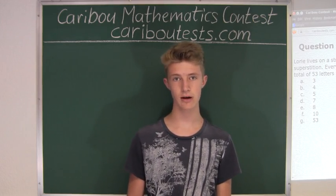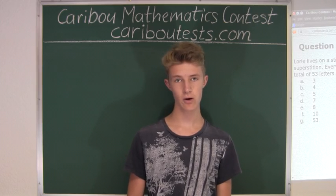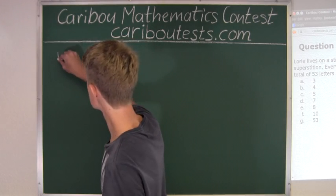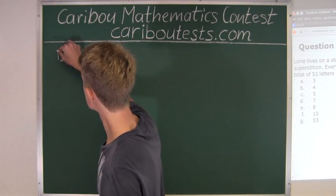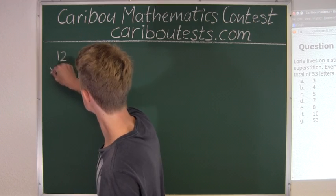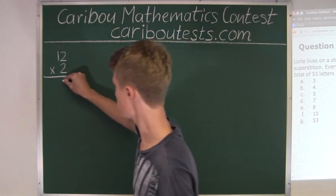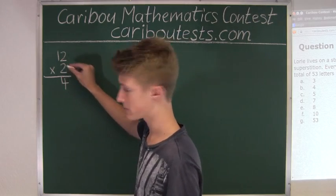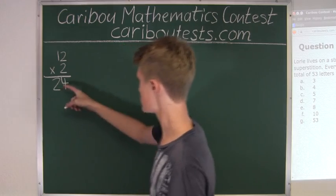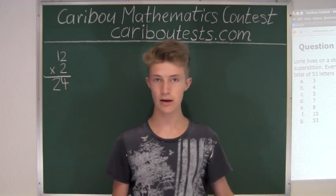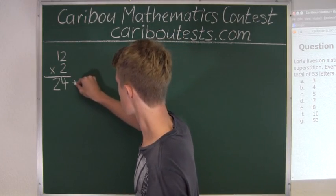Since there are 12 other houses other than Lori's, we have 12 times 2, which is then 2 times 2 is 4, 2 times 1 is 2, which means that there are 24 letters. Plus Lori's 3 letters would be 27.